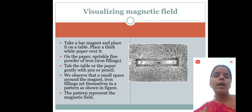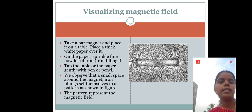So children, to do this activity, first we have to take a bar magnet and place it on a table. Place a thick white paper over it. On the paper, sprinkle fine powder of iron or iron fillings. Then tap the paper or table gently with pen or pencil.